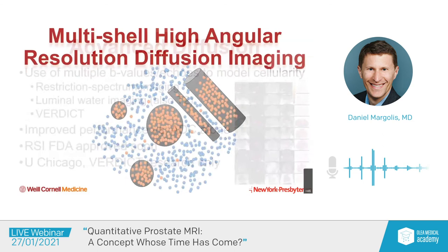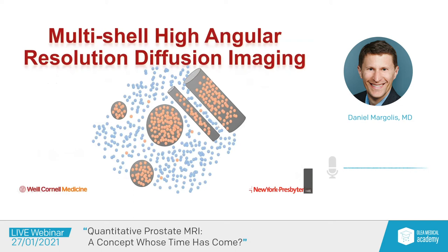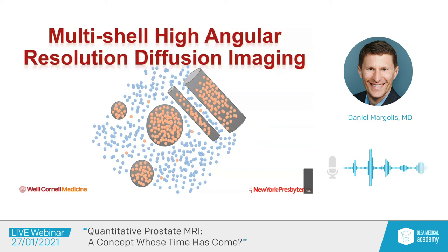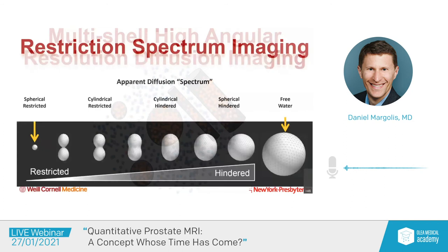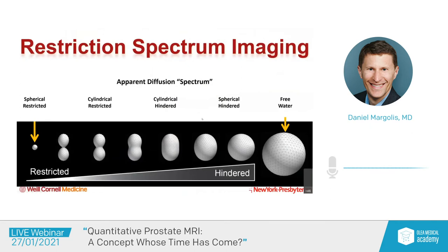Let's take RSI as an example. You can think of populations of water protons in different shapes. By applying different B-values but also using high angular resolution diffusion imaging with multiple different directions, we can characterize whether there is some order and shape to the degree of restricted diffusion — is something cylindrical, such as in a nerve fiber, or is it spherical in a cancer cell? That gives us the ability to look at spherically restricted versus hindered and unhindered diffusion as part of restriction spectrum imaging.